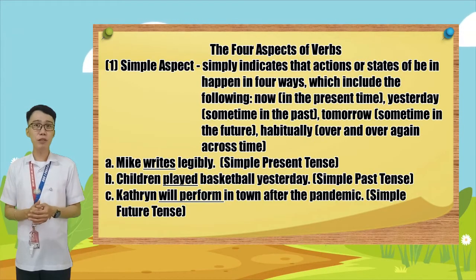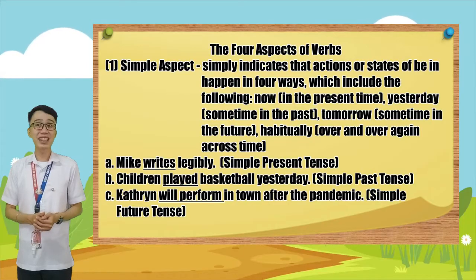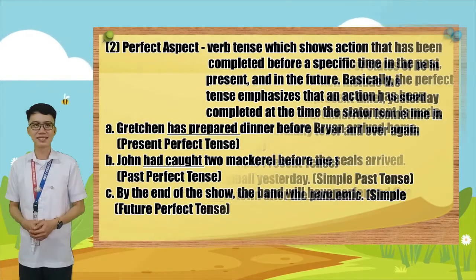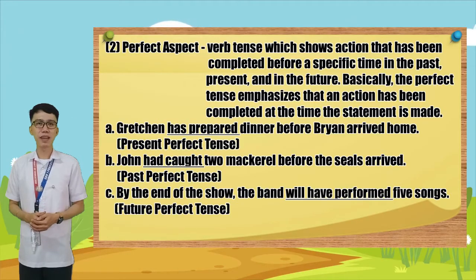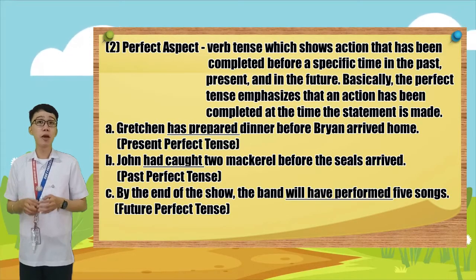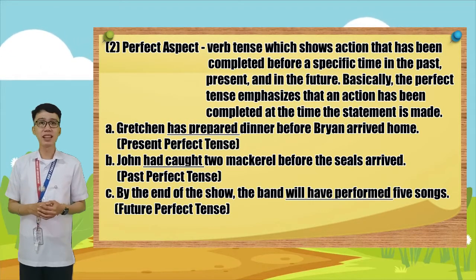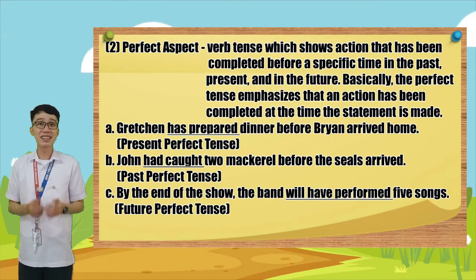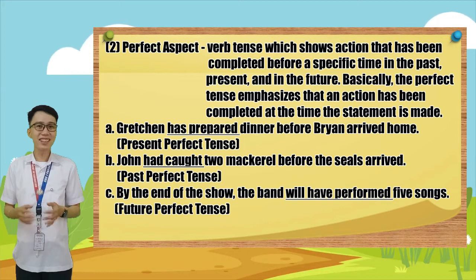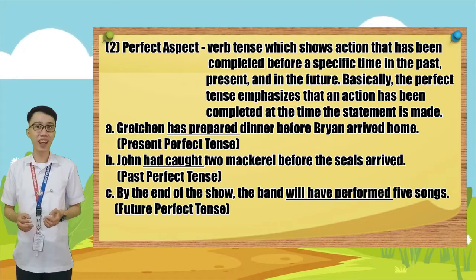Letter C: 'Catherine will perform in town after the pandemic.' What is the tense of the underlined verb? Great! The answer is in simple future tense. Number two: perfect aspect. Perfect aspect is a verb tense which shows action that has been completed before a specific time in the past, present, and in the future. Basically, the perfect tense emphasizes that an action has been completed at the time the statement is made. Letter A: 'Gretchen has prepared dinner before Brian arrived home.'